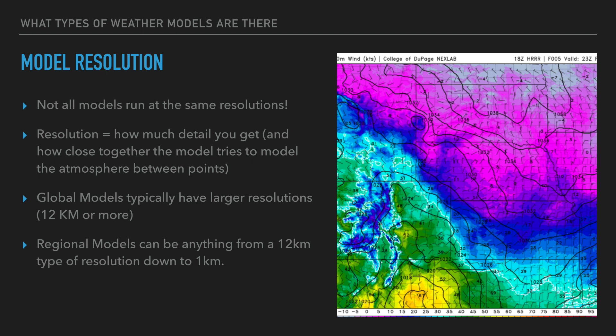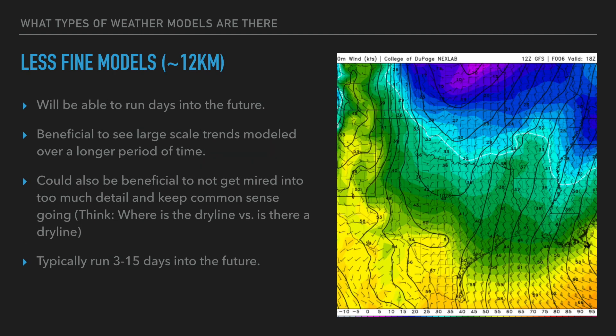Regional models can be anything from 12 kilometers — something like the 12-kilometer NAM — all the way down to one kilometer. There's actually a one-kilometer NAM that runs every now and then in a storm region as a fire weather nest. That one-kilometer model is very high resolution and would model individual storms. These less fine models at 12 kilometers can run days into the future. We don't have the computing power to run a one-kilometer model 15 days out. So they're able to see days into the future — great for looking at patterns a week out for severe weather.